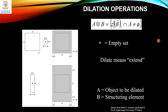Dilation is represented in set format as A dilates B, where B is the structuring element. A dilation B is equal to the set of all values z where B-hat of z intersection of A is not equal to phi (the empty set). Basically, dilate means extend: A is the object to be dilated and B is the structuring element.